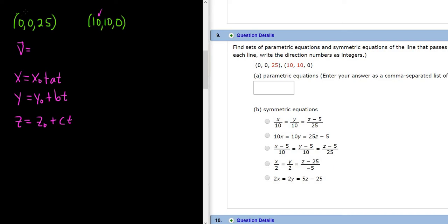So we'll do 10 minus 0. That'll give us the first component. And the second component, again, will be 10 minus 0. And the third component would be 0 minus 25. So just be careful when you're subtracting the components.